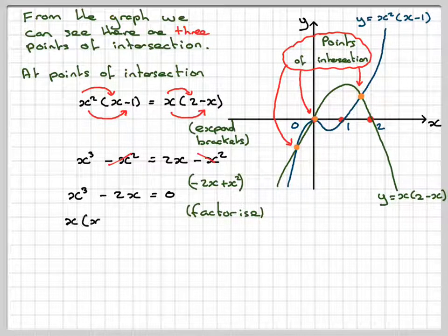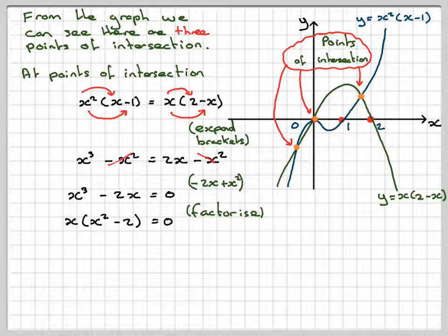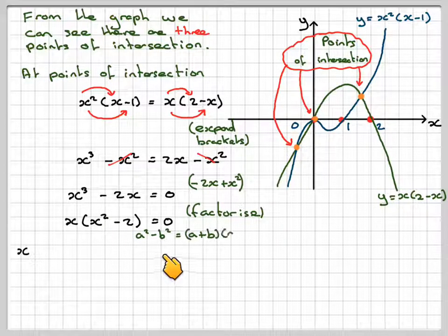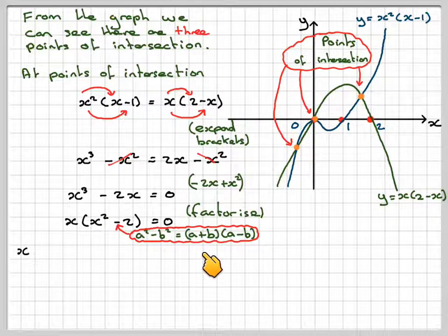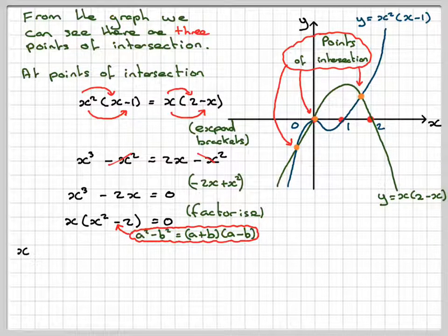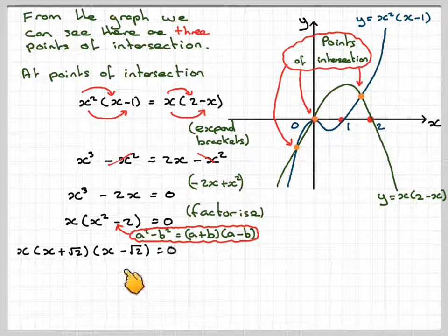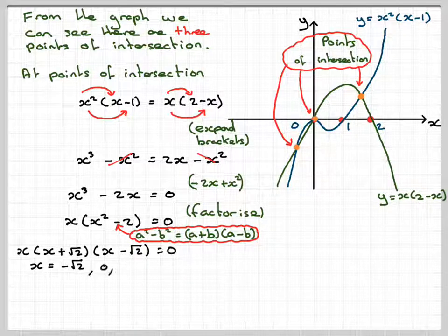Factorising x³ - 2x = 0, we take out a common factor of x: x(x² - 2) = 0. We can recognise x² - 2 as a difference of two squares form (a² - b² = (a+b)(a-b)) with a = x and b = √2. So x(x + √2)(x - √2) = 0, giving x = -√2, x = 0, or x = √2.